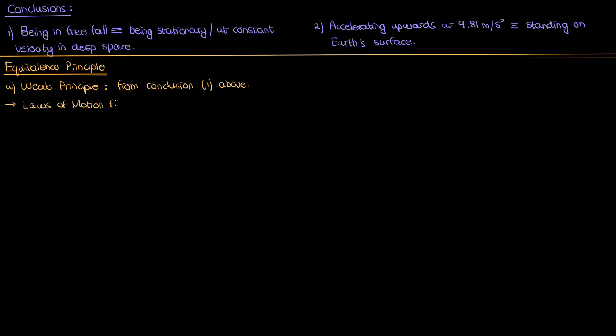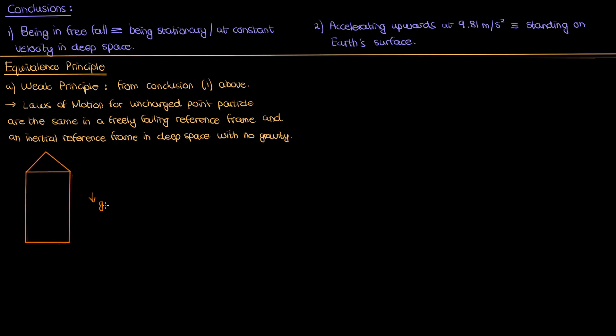The weak principle states that the laws of motion for an uncharged point particle are the same in a freely falling reference frame and in an inertial reference frame that's floating in deep space without any gravitational influence. By the way an inertial reference frame just means a reference frame and coordinate system traveling at a constant velocity. So if I'm in a rocket ship that's freely falling towards the Earth's surface and if I throw an uncharged ball across this rocket ship with a certain initial velocity v sub i, then the trajectory and path of this ball will be the exact same as that of another ball thrown with the same initial velocity but this time in a rocket ship that's just floating out in deep space. This is the weak equivalence principle.